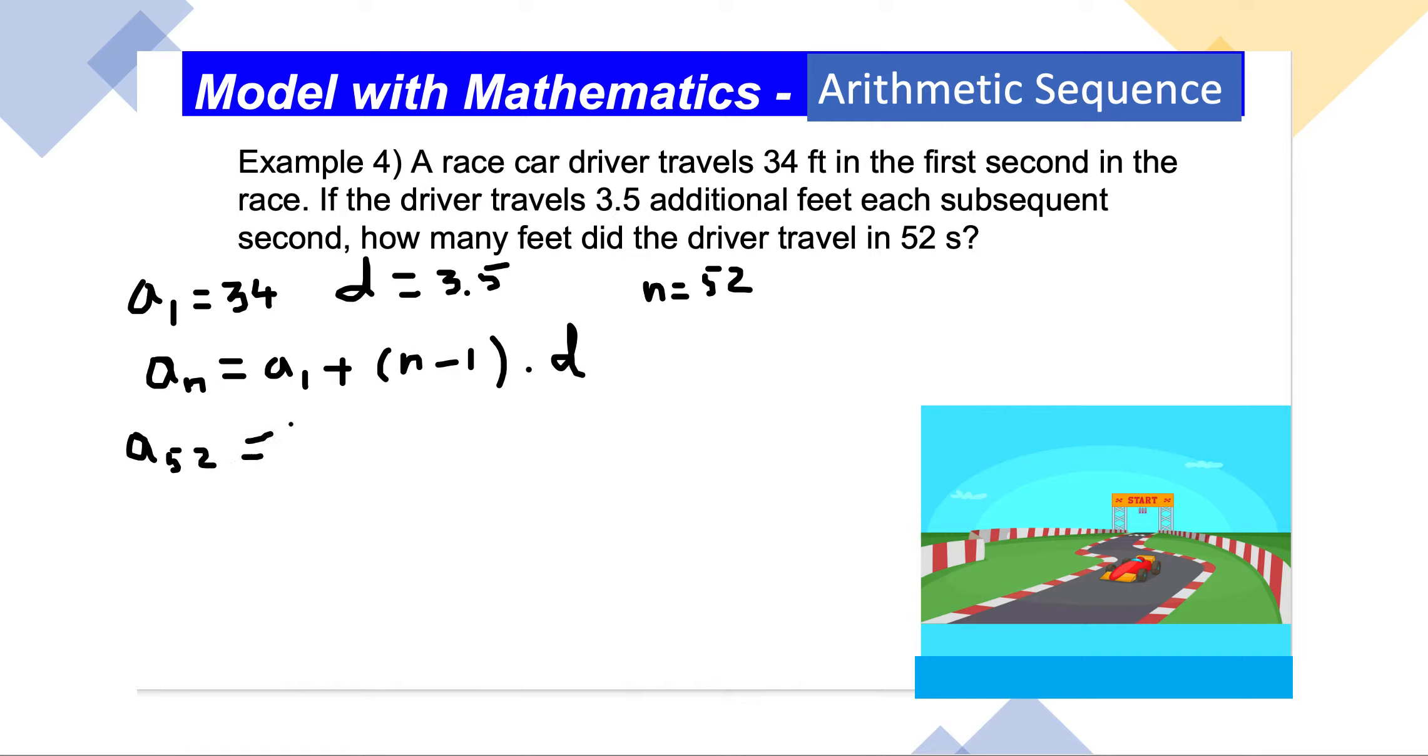So a₅₂ is going to equal a₁, but a₁ is 34, so I'll plug in the numerical value: a₅₂ = 34 + (52 - 1) × 3.5.